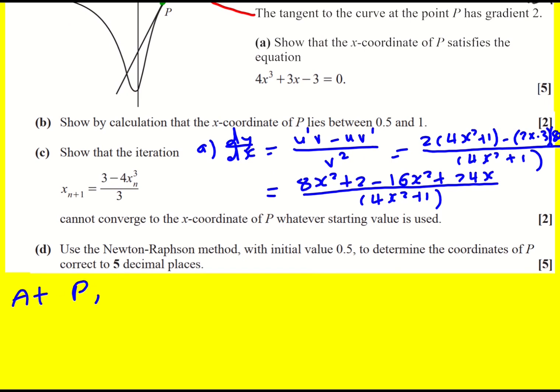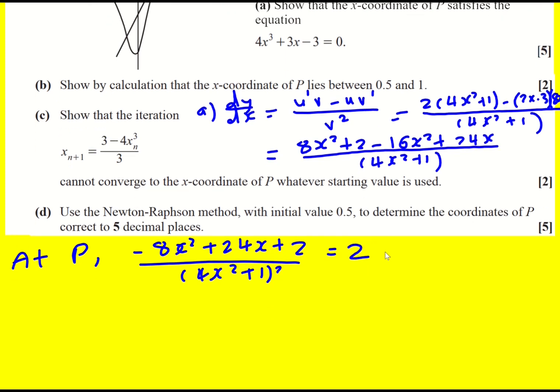At P, it's going to be minus 8x squared plus 24x plus 2 all over 4x squared plus 1 squared, equals 2. And I can multiply through. What I'm going to do at this point is divide through by 2, since 2 goes into everything on the left. So minus 4x squared plus 12x plus 1, and then expand the double bracket. So 16x to the 4 plus 8x squared plus 1.